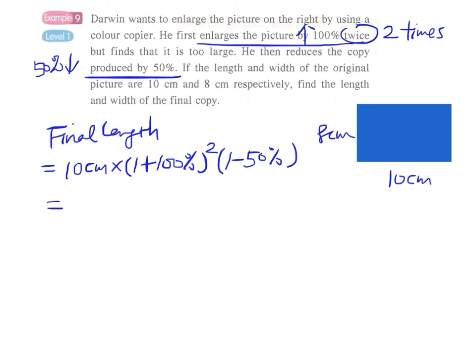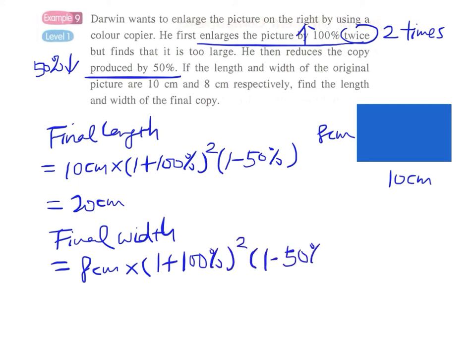From the calculator, we have 20 cm. For the final width, we use the same formula: 8 cm times (1 + 100%)² and then multiply by (1 - 50%). The answer is 16 cm. We can see that the final length and width are doubled from the original dimensions.